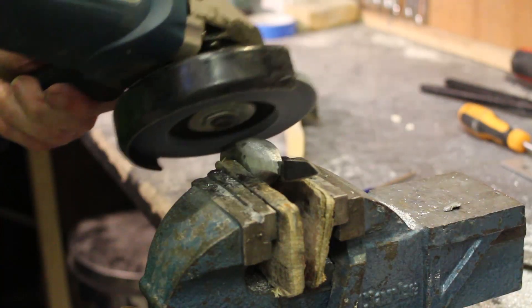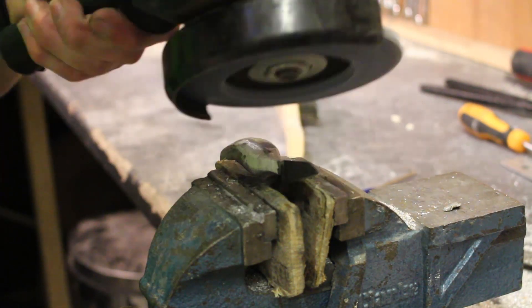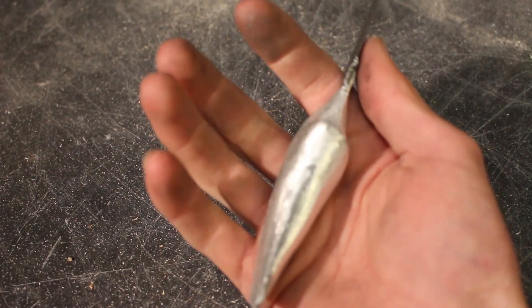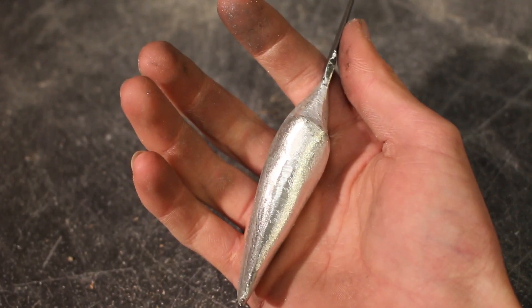I smoothed out all of the deep scratches left by the rasps using an angle grinder and files. Now I've achieved the final shape of the handle and I'm really pleased with the way that it fits really nicely into my hand. I made the finger groove slightly asymmetrical so that it fits better.